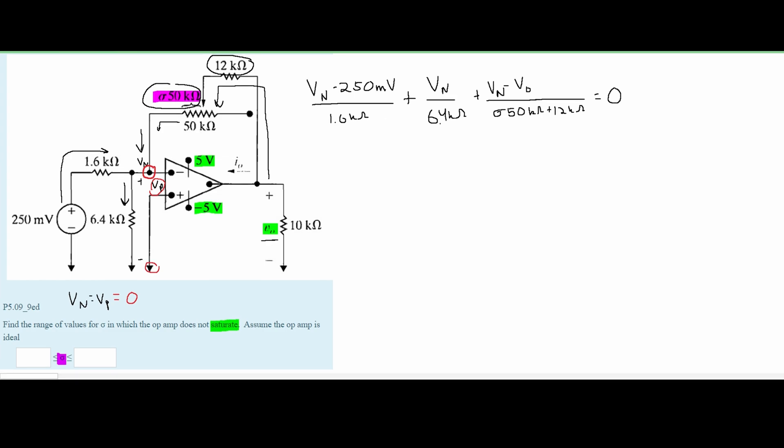Before we solve this, we want to write out a few things. We know that our Vn is equal to zero. So this is zero, this will be zero, so that means this whole entire thing is zero, and this Vn is also zero.